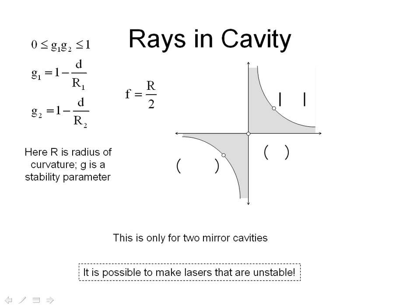This is fairly easy to determine. Your book goes through a derivation that I'm not going to repeat here, but the key equation for stability is shown right here. We have two parameters, g1 and g2. These parameters depend only on the distance d between the mirrors and the radius of curvature r of mirror 1 and r of mirror 2. We have a parameter g1 for one mirror and g2 for the other. If this inequality is fulfilled — that g1 times g2 is between 0 and 1 — then we have a stable laser cavity.